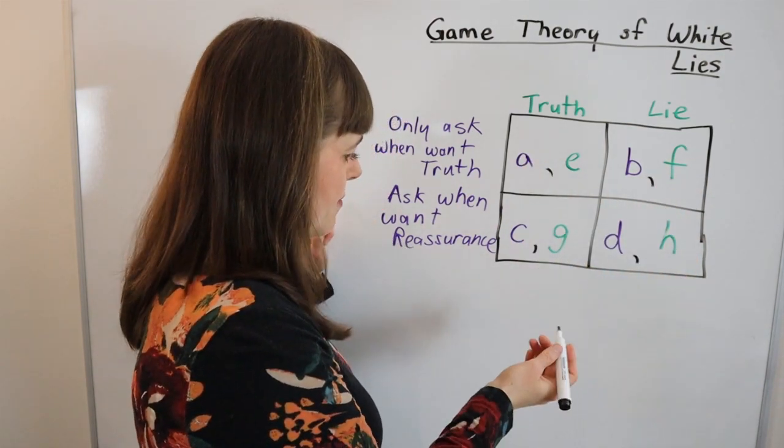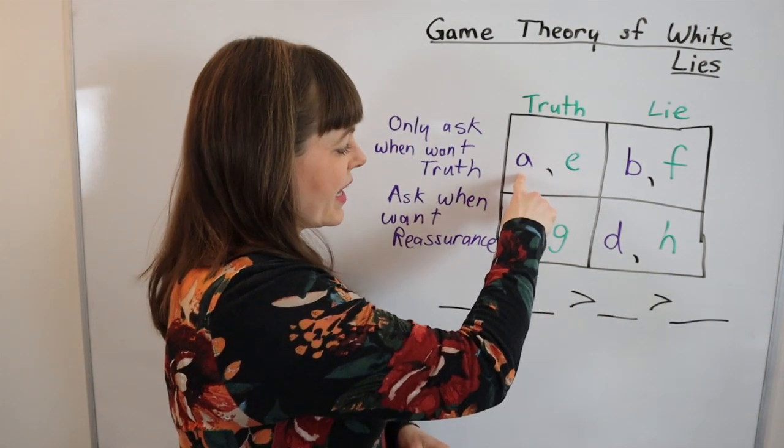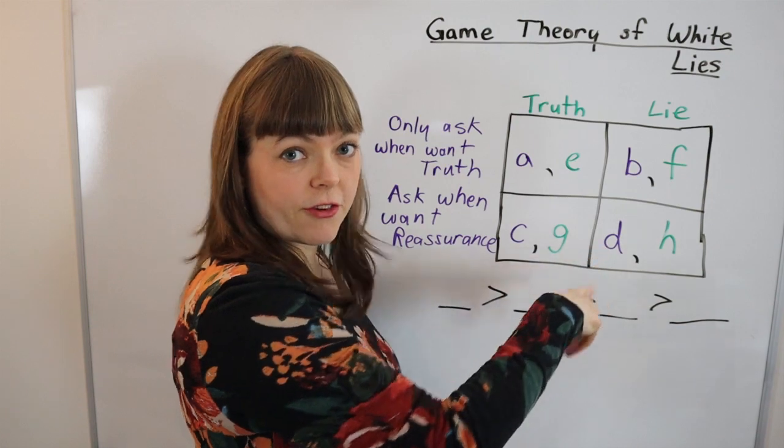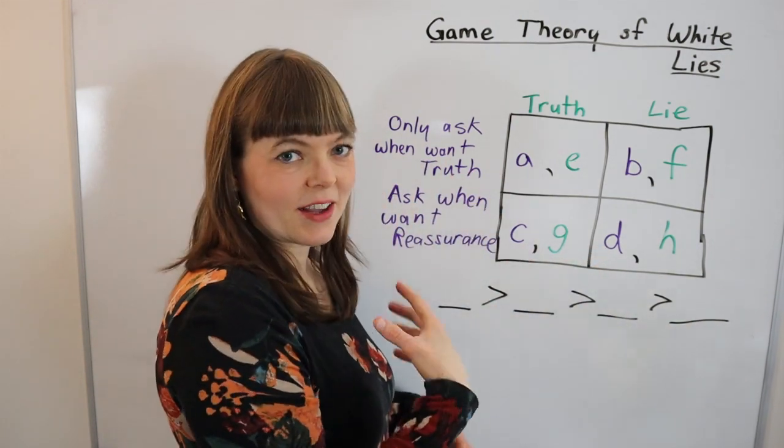So I will oftentimes set this up like this where we need to place the four payoffs for the girlfriend into ascending order.